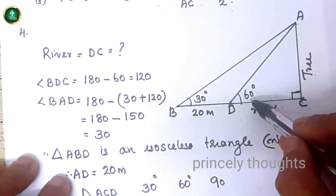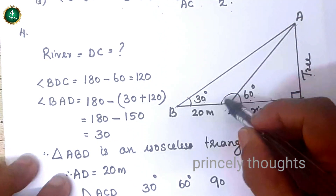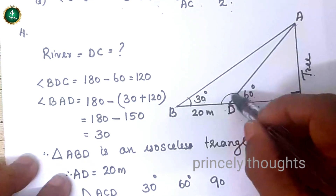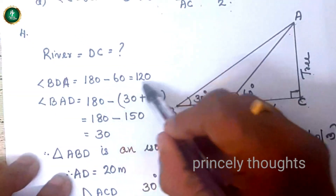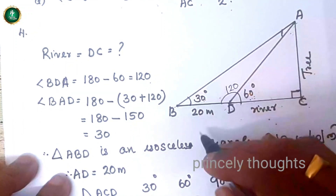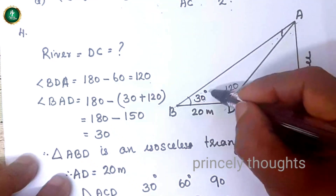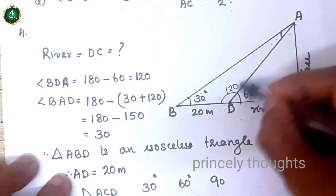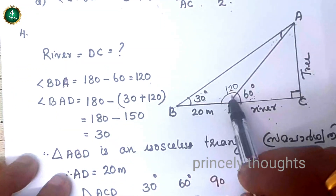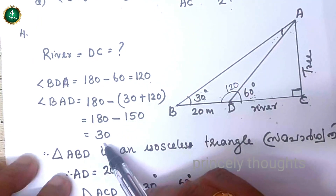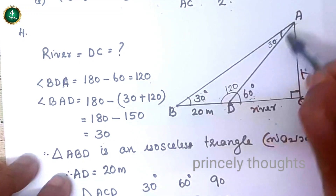This is the right angle of elevation. The angle at the first point is related to a linear pair — 180 minus 60 equals 120 degrees. This angle works out to 80 degrees, and the angle BAD is 30 degrees. So triangle ABD has two angles of 30 degrees.